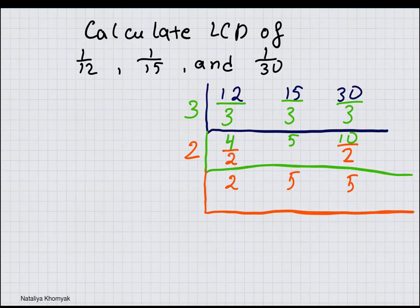2 and 5 cannot be divided by a common number except 1, but we can divide both 5s by 5. 2, 5 goes into 5 one time, 5 goes into 5 one time.